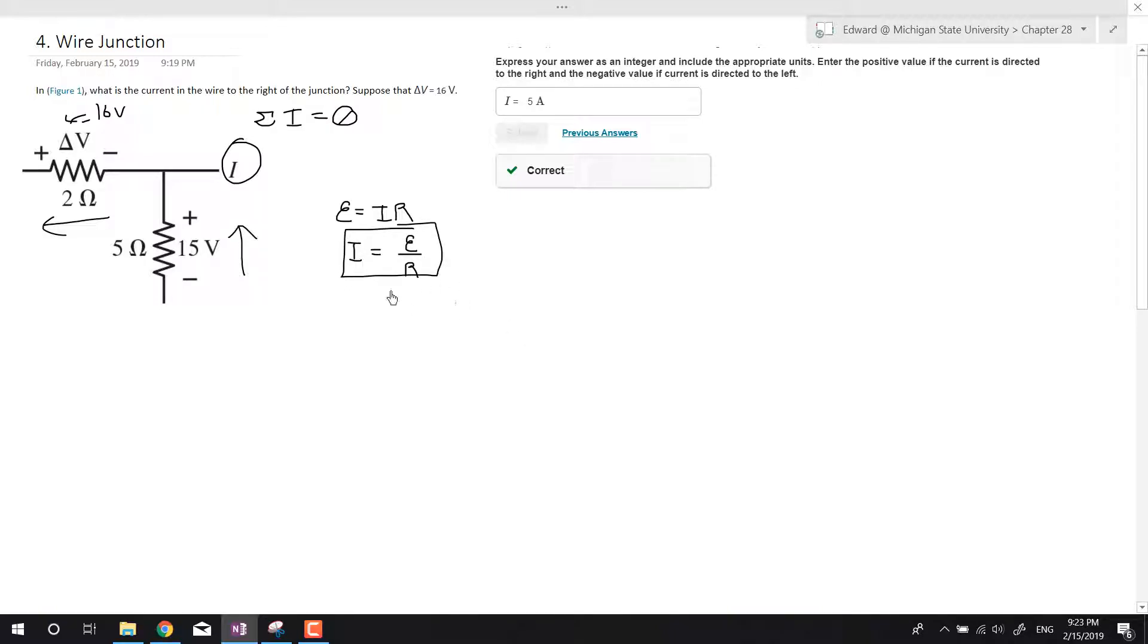So basically, let's go ahead and find the current. For the first one, it's just going to be 16 divided by 2, which is going to be 8 amps. So that's 8 amps going out. And then we're going to have 15 divided by 5, which is going to be 3 amps going in.